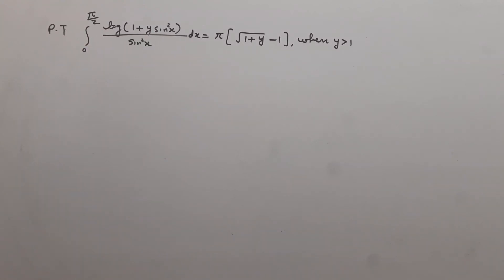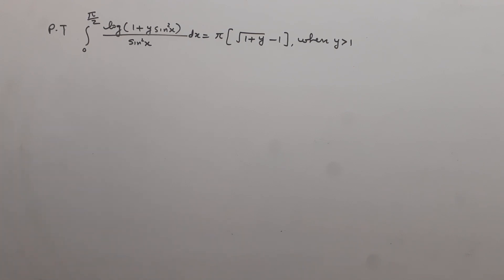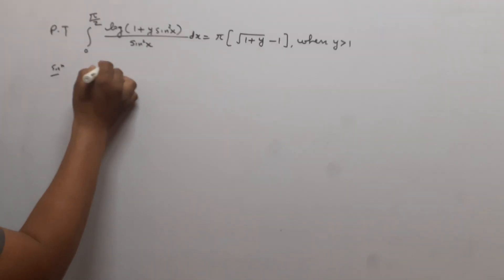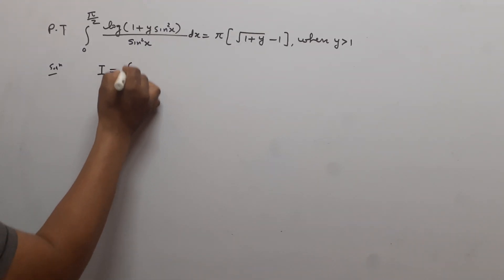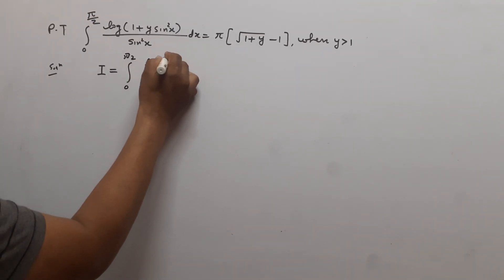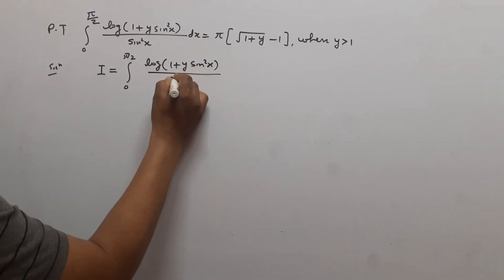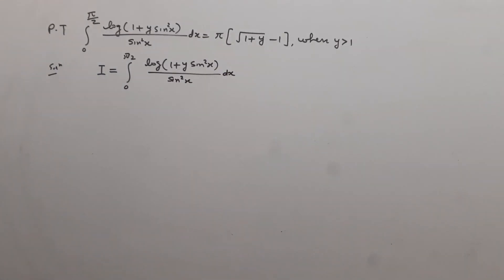Students, today we have to solve this integral: log(1 + y·sin²x) / sin²x between the limits 0 to π/2. We have to prove that the value of this integral is π times (√(1+y) − 1) when y is greater than 1. First, we suppose that the given integral is equal to I = ∫₀^(π/2) log(1 + y·sin²x) / sin²x dx.